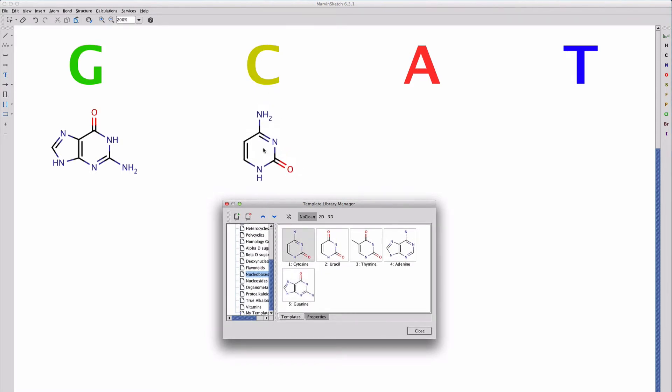G for guanine, C for cytosine, A for adenine, and T for thymine.